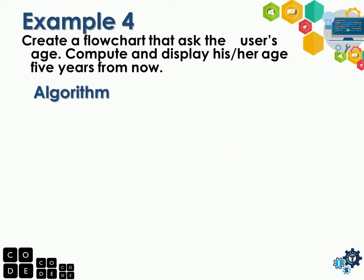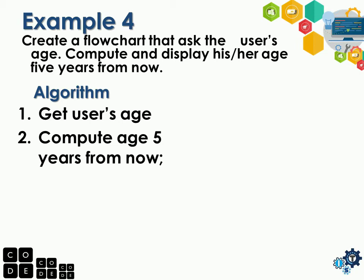Example number 4: create a flowchart that asks the user's age, compute and display their age 5 years from now. For the algorithm: first, get the user's age — since we don't know the exact age, it depends on the user, it could be 12 or 28. Next, compute the age 5 years from now. The equation is: age is equal to age plus 5. So whatever your age is, display your age plus 5 — that's your age after 5 years.